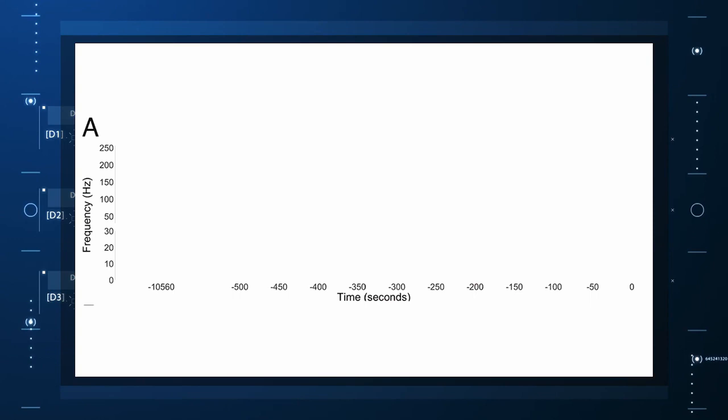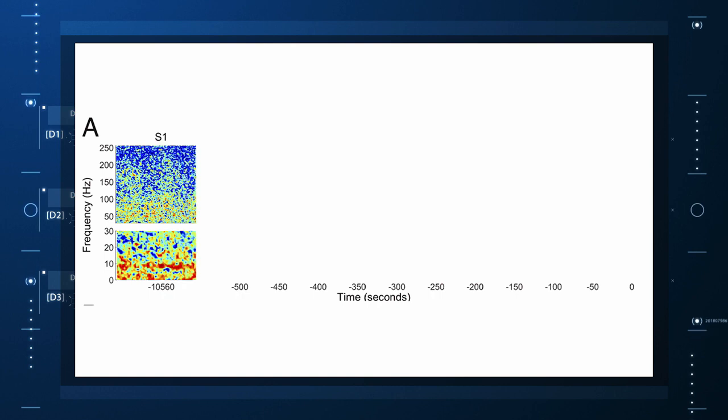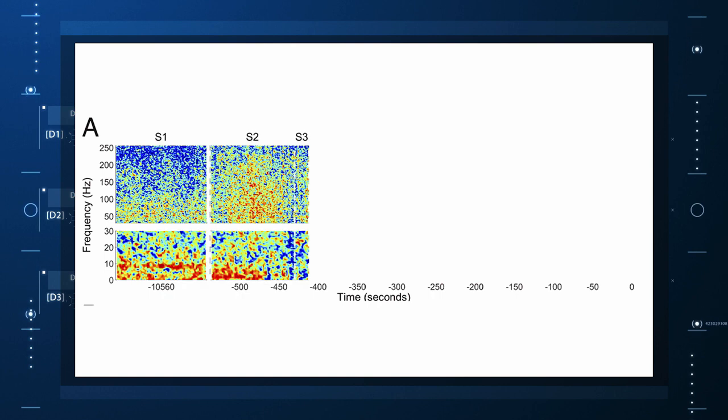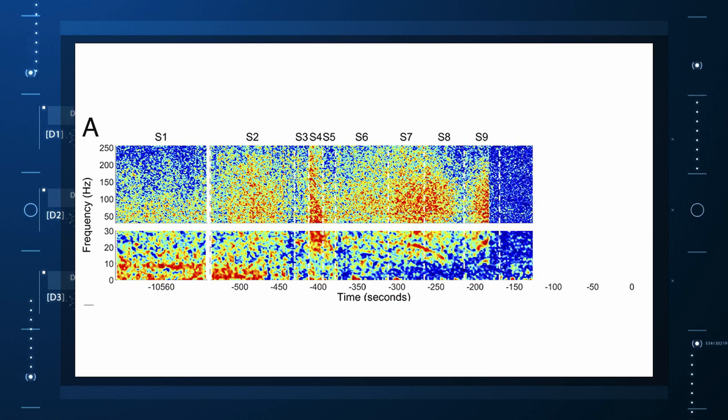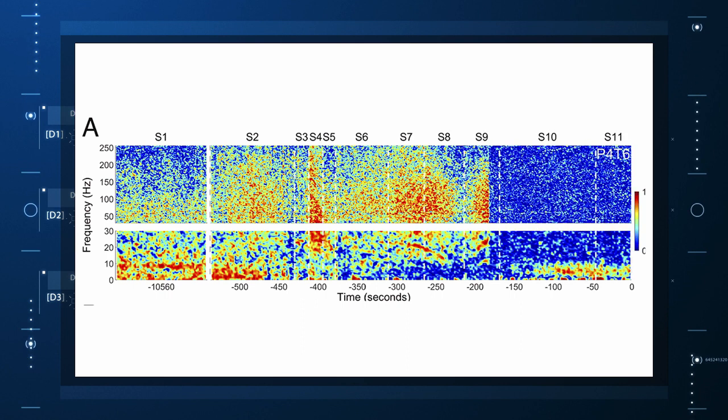But connectivity mapping tells a different story. The signals seem to have structure. Those high frequency power surges increased connectivity in the posterior cortical hot zone, an area of the brain many researchers feel is necessary for conscious perception.